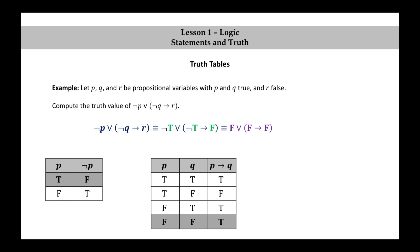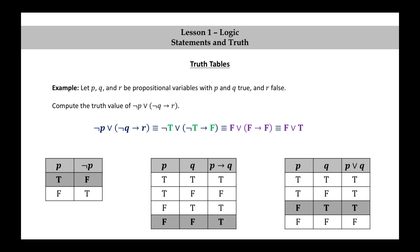Next, we'll look at the truth table for the implication — in particular the fourth row: false implies false is true. Finally, we look at the truth table for the disjunction, in particular the third row, and we see that false or true is true.